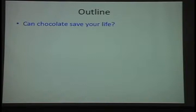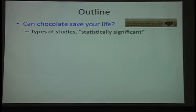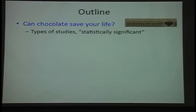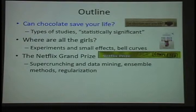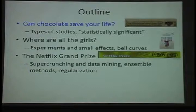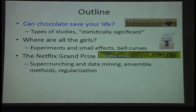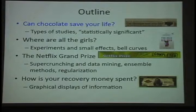The four topics are: Can Chocolate Save Your Life? — which I discussed with Alice; Pink Brain, Blue Brain — prompted by a just-published book summarizing current knowledge about boys and girls and math; the Netflix grand prize, which I actually taught in my advanced graduate course on data mining; and finally a discussion of graphical displays of information with some emphasis on the U.S. recovery program. So four different sections — let's start with the chocolate.